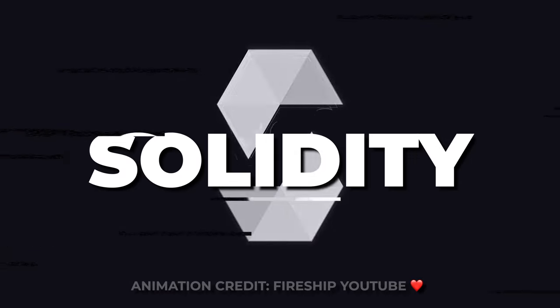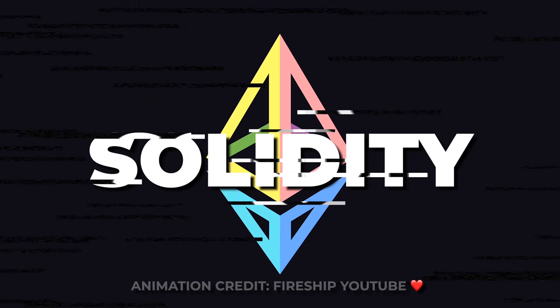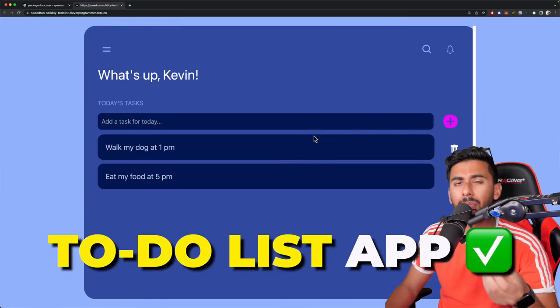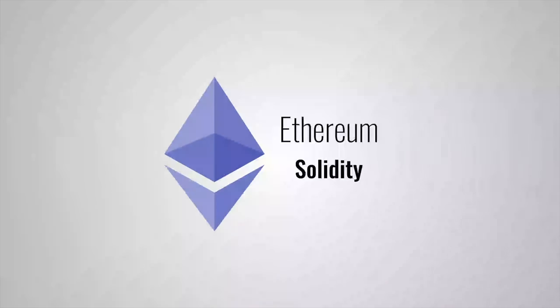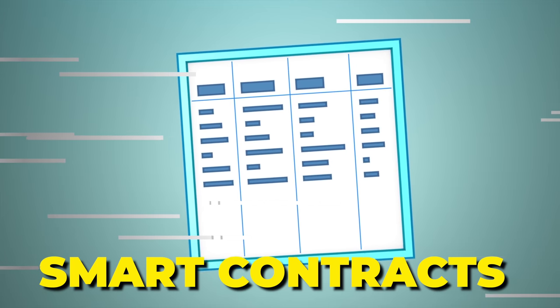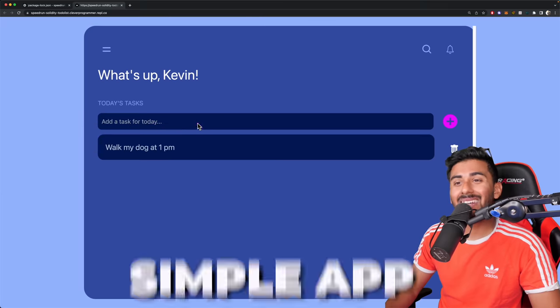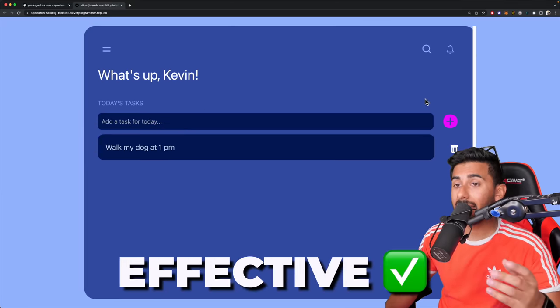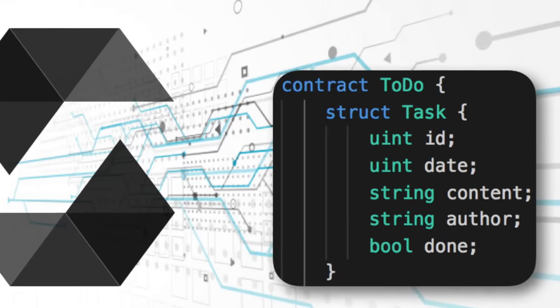Do you want to master Solidity? Do you want to finally understand it and wrap your brain around it? Well, guess what? We are going to build a to-do list app together. In my opinion, this is one of the best ways to learn how Solidity works, how smart contracts work, because this app's scope is small. It's a simple app, yet it's very powerful and effective, and it'll get you to understand how a lot of functionality in Solidity works.